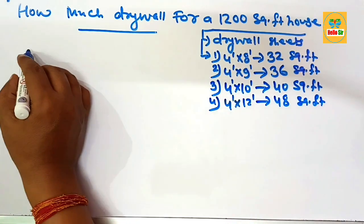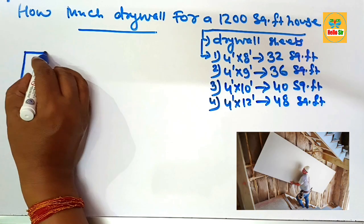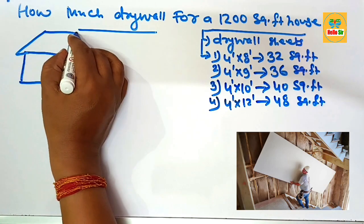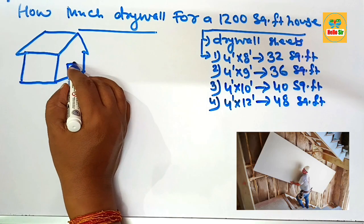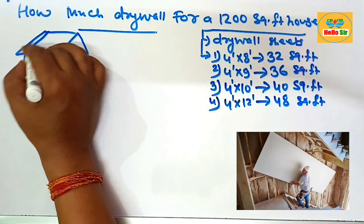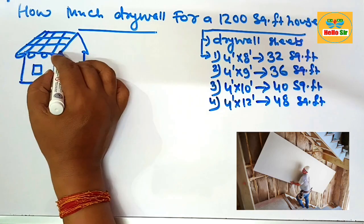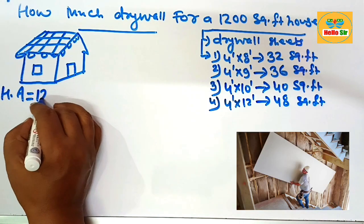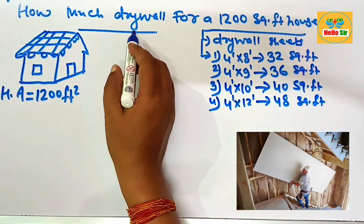Now we make a rough diagram to understand the square footage of the house. This shows a single door, a window, a roof covered with single material, and nosing. Suppose this house area is about 1200 square footage — and how do we calculate the total drywall area required?